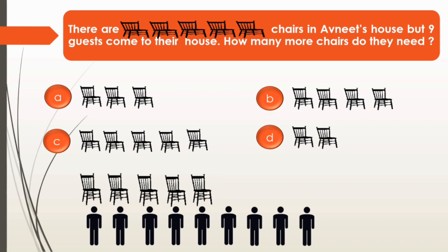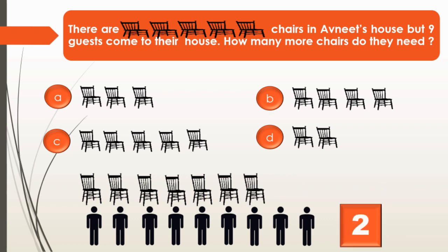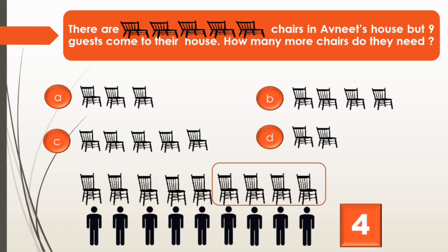Avneet had 5 chairs and 9 guests came. We will find the number of more chairs needed by counting: 1, 2, 3, and 4. Yes — 4 more chairs are needed. Option A has 3 chairs, Option B has 4 chairs, Option C has 5 chairs, and Option D has 2 chairs. So we will tick Option B — 4 chairs is the right answer.